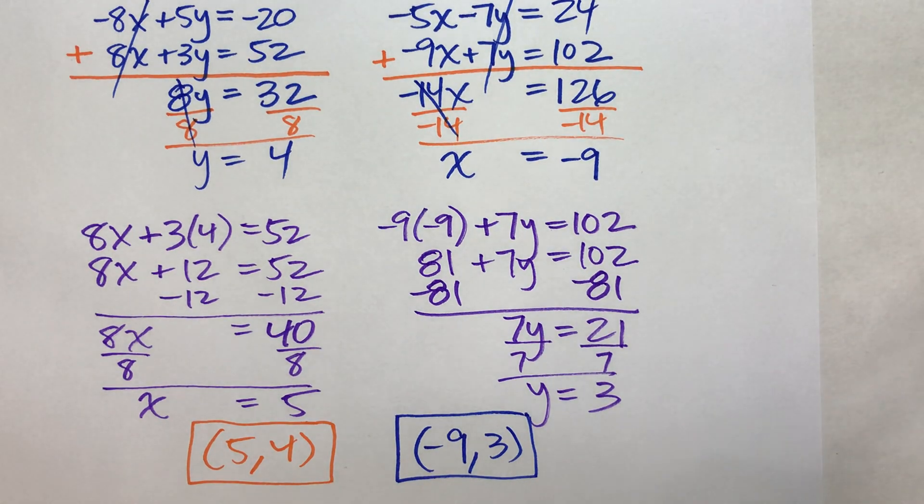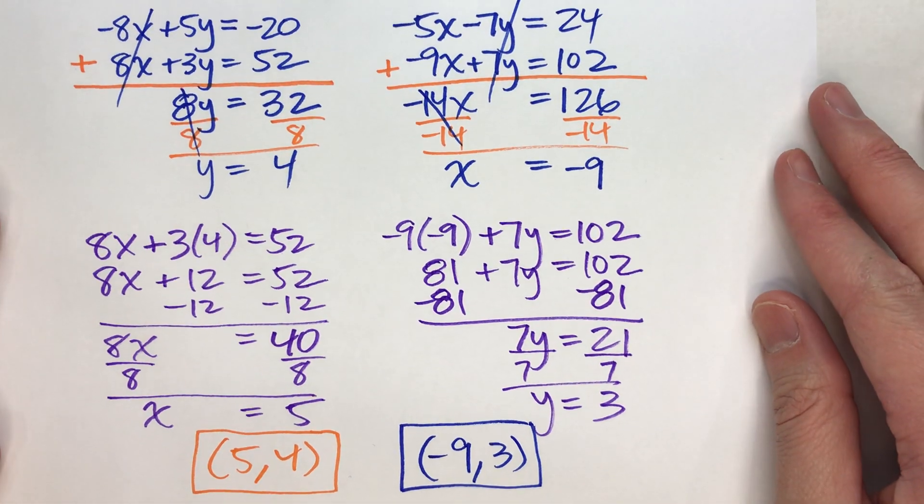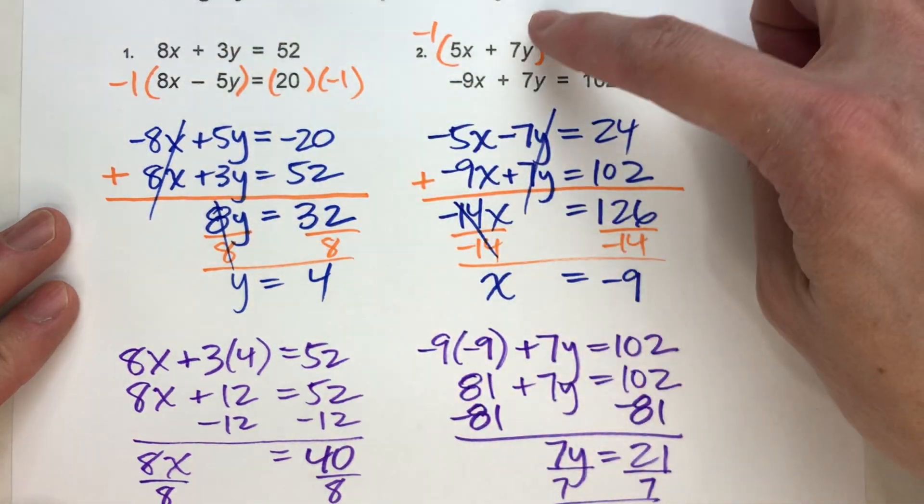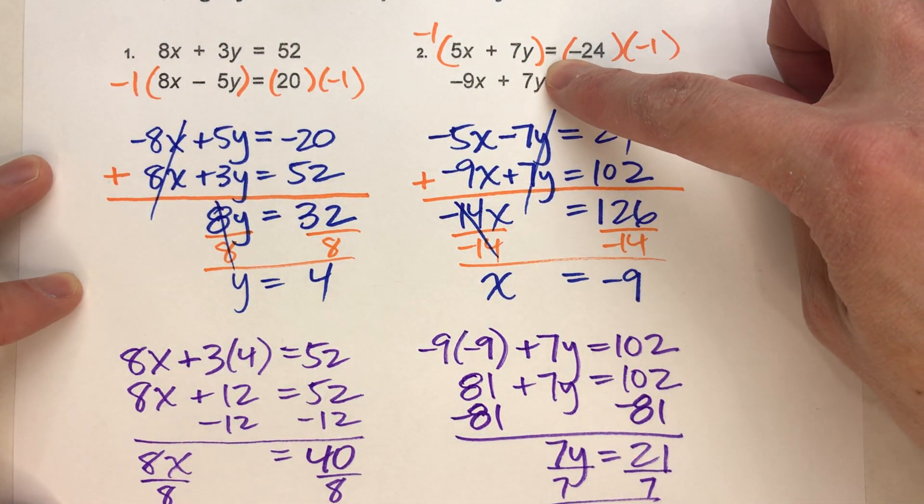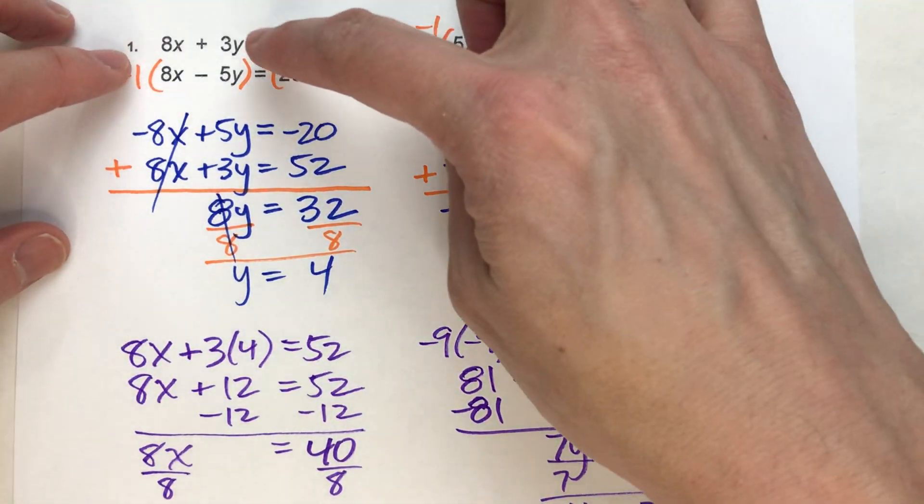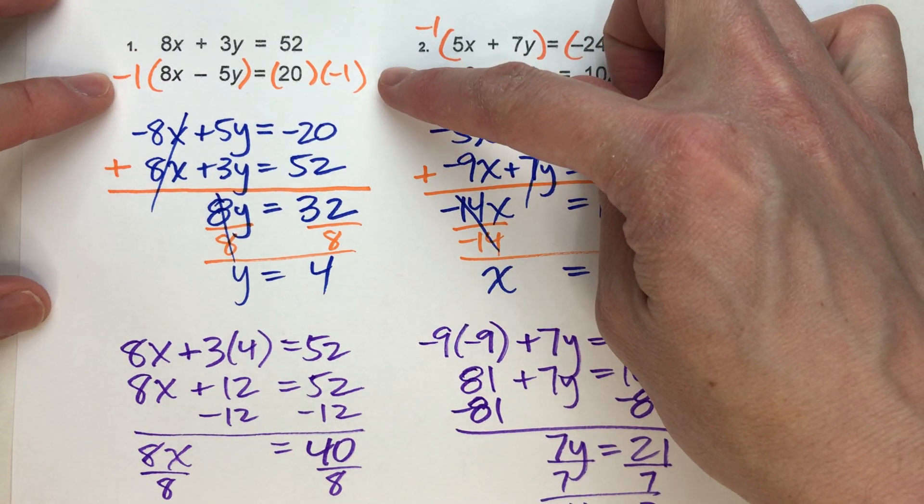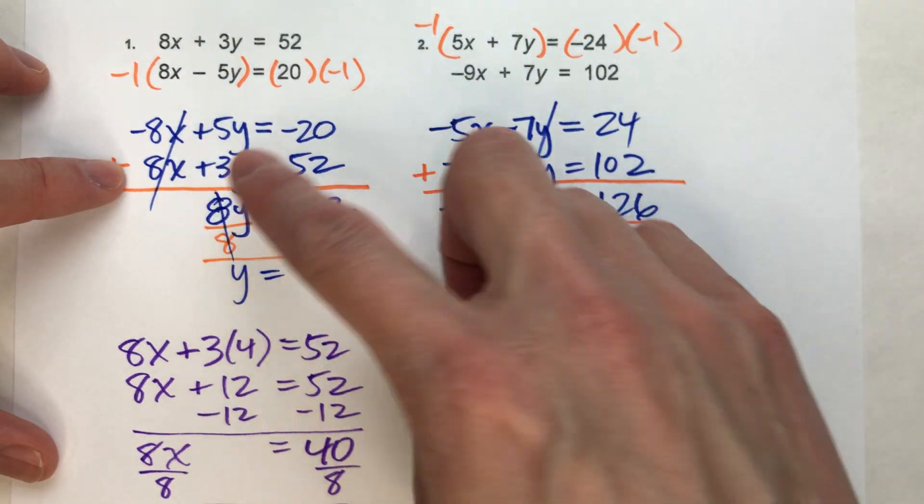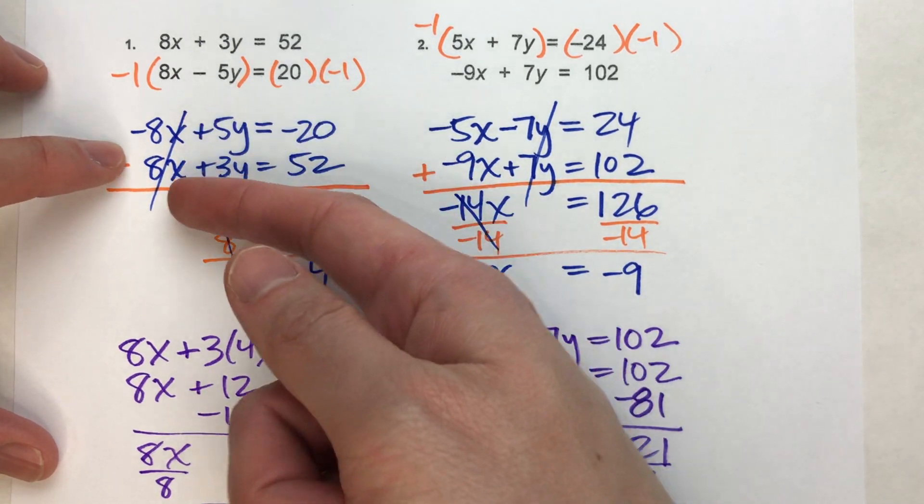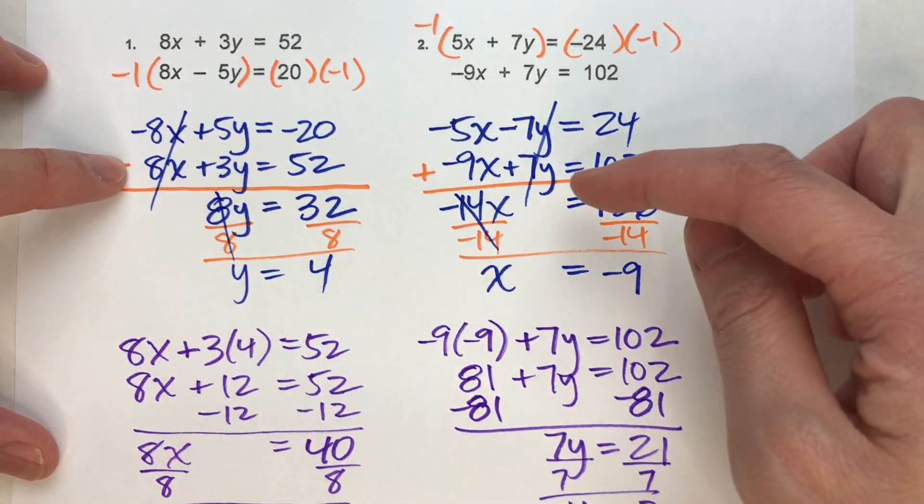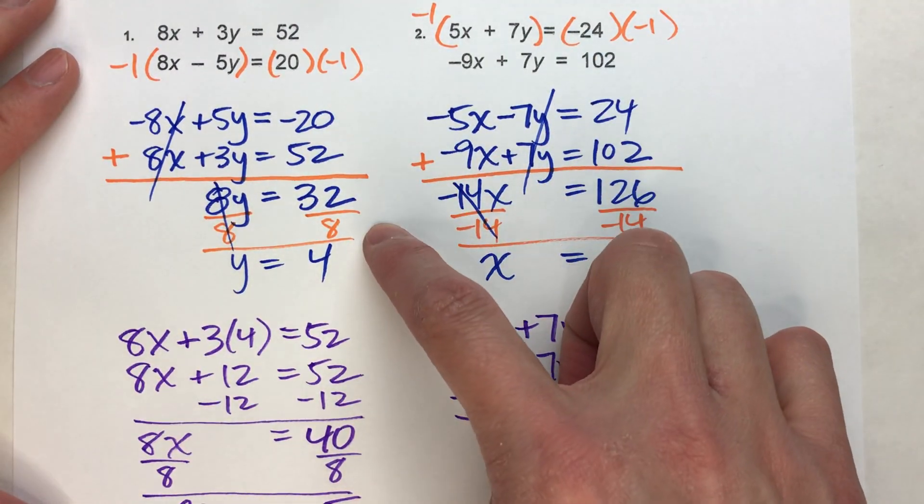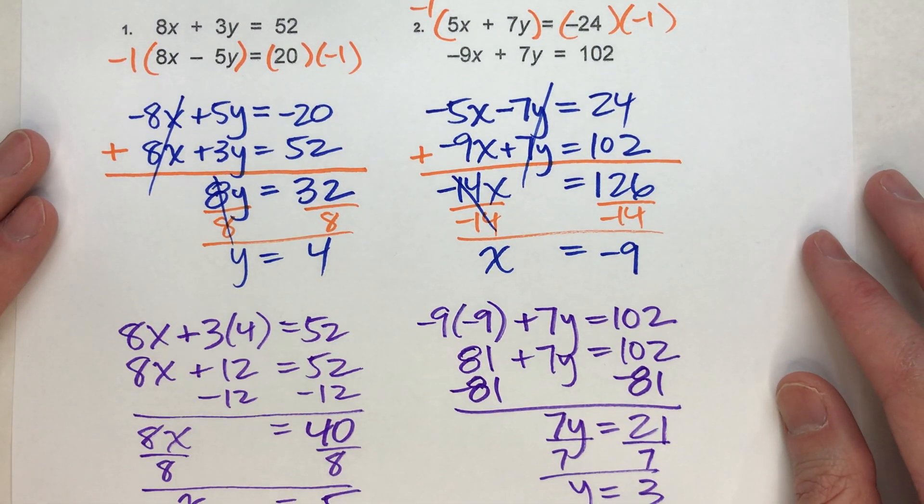So, the key here is, when you have the exact same number of x's or y's in the original problem, like we do here and here, here and here, we can't just add the two equations to eliminate a variable. But, if you multiply both sides of one of those equations by negative 1, then we'll be in a situation where we'll have the same number of x's, but one positive and one negative. Their coefficients are opposites. In that case, now we can add the two equations to eliminate a variable, and then solve it easily.